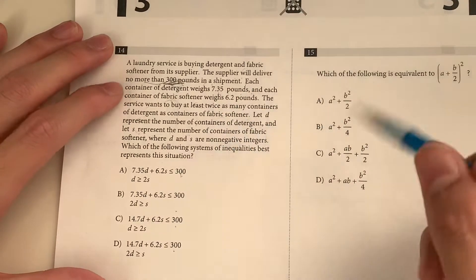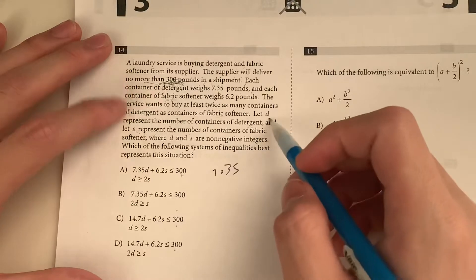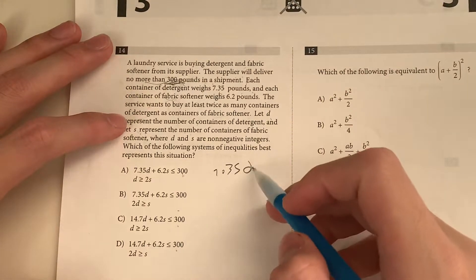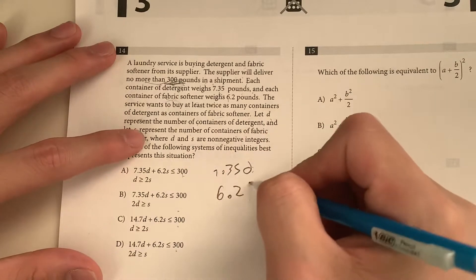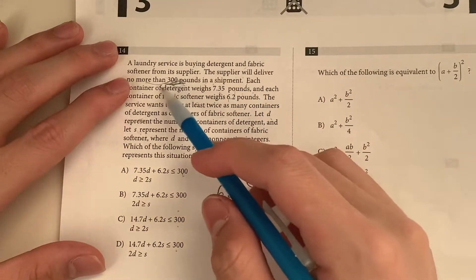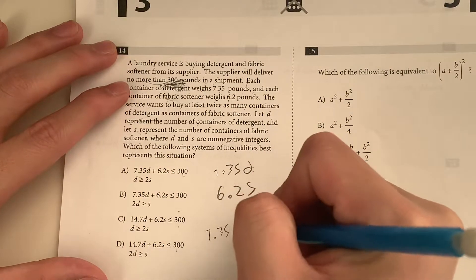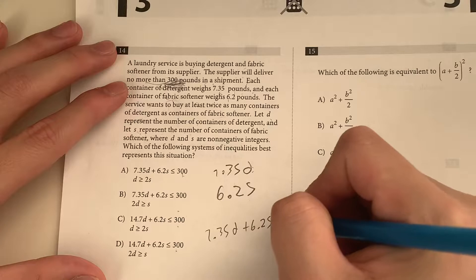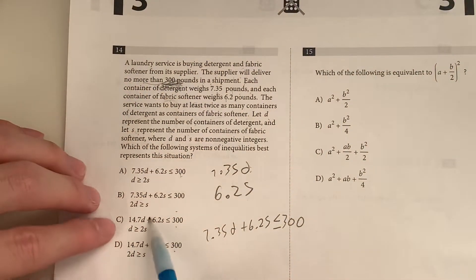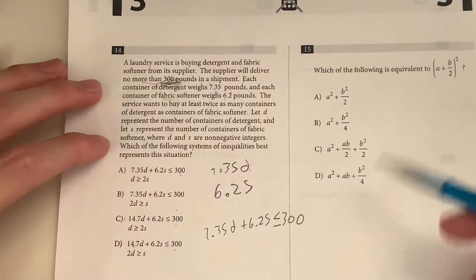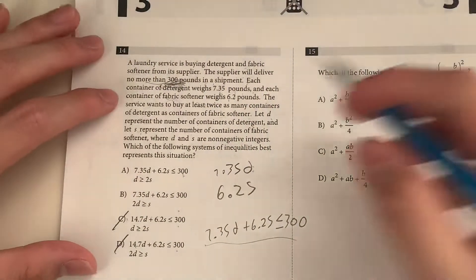Now, we need 7.35 to be attached to the detergent. So detergent is represented by D. So we need 7.35 D, and then 6.2 softener. So when we add these two up, it has to be no less than 300 pounds. So 7.35 D plus 6.2 S has to be less than or equal to 300. Now, looking at your answer choices, I don't know why C and D have 14.7 in them, so we're just going to take them out because this is what the question is telling us.